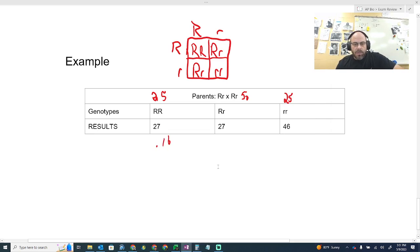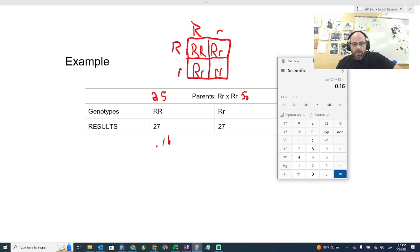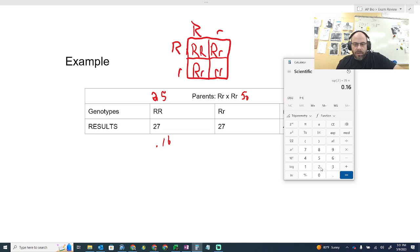And then I'm going to do the next one. Well, this one also had 27, but the expected was 50. So 27 minus 50 equals negative 23 squared. That is 529. Divide that by 27. No, wait. Divide that by 50. So what's that? 529 divided by 50. Because that's the expected, right? 10.58.